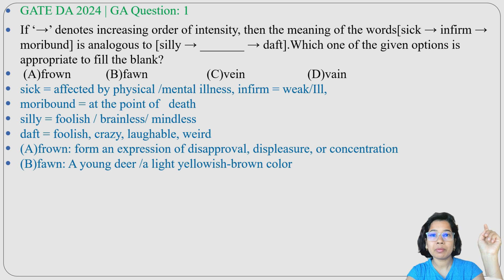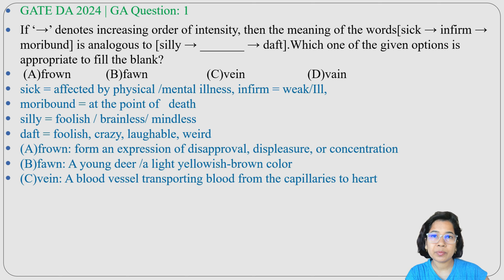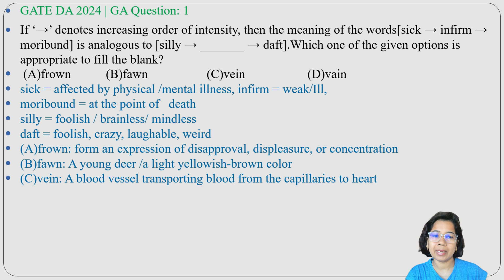Option C is vein — vein is in our body and it transports blood, so vein is the blood vessel. This option is about the anatomical meaning of vein.